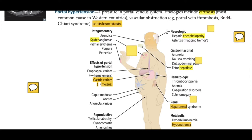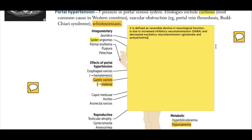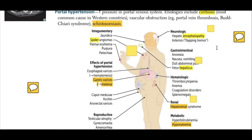In the central nervous system, hepatic encephalopathy occurs due to increased amounts of ammonia and other waste products in the blood. These can cross the blood-brain barrier and reach the brain, causing encephalopathy because the liver is not detoxifying these toxic substances. It is defined as a reversible decline in neurologic function due to increased inhibitory neurotransmission via GABA and decreased excitatory neurotransmission via glutamate and acetylcholine.